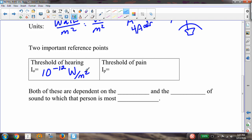And then the second thing is the threshold of pain. And the threshold of pain is 1.0 watts per square meter.